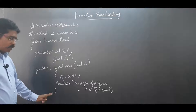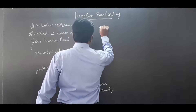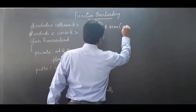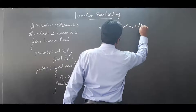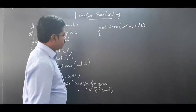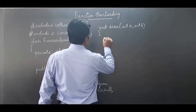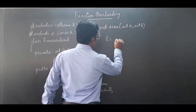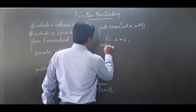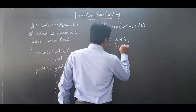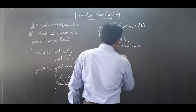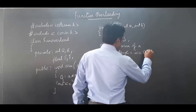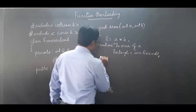Moving to the next function, still inside the class: void area(int a, int b) — two arguments to find the area of a rectangle. Inside: r = a * b, using the private data member r. Then the output: cout << "The area of a rectangle = " << r << endl. I close the flower bracket for this function.